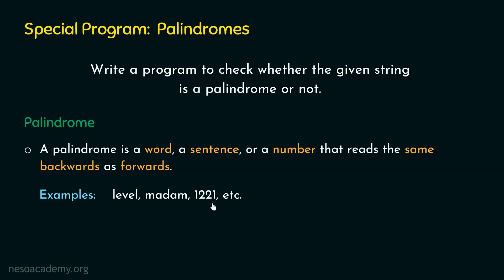Why is that the case? The first word is a palindrome because if we read this word from left to right, we will get 'level.' And if we read this word from right to left, then also we will get 'level.' According to the definition, a palindrome is a word, a sentence, or a number that reads the same backwards as forwards.